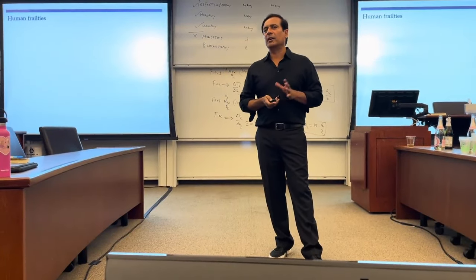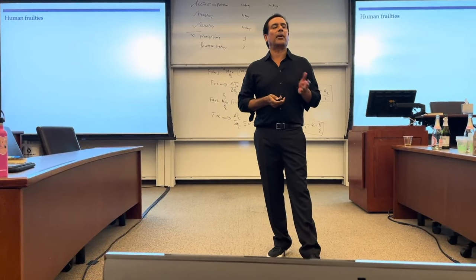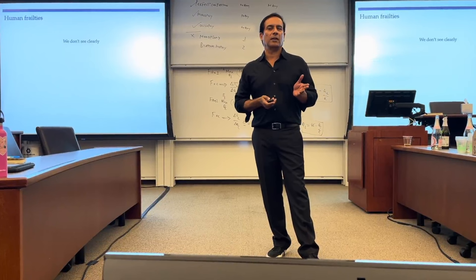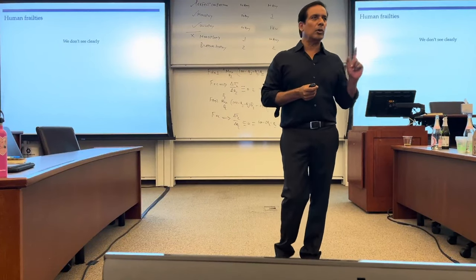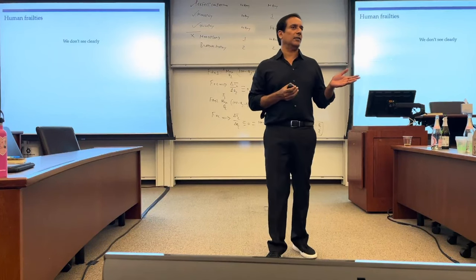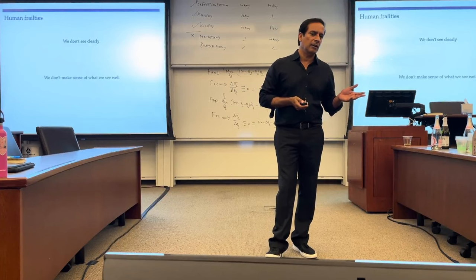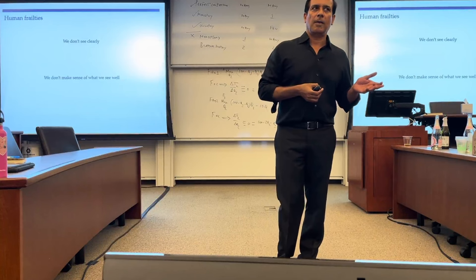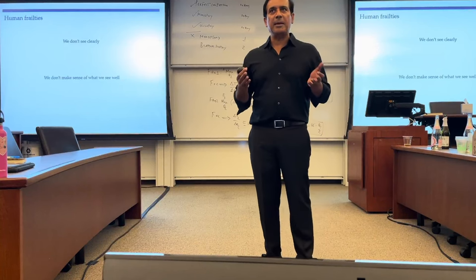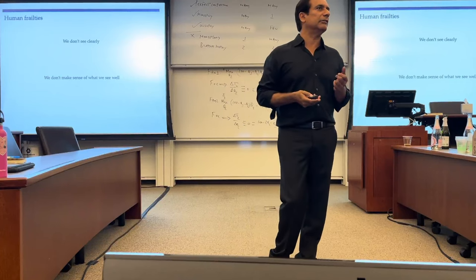Human frailties. Here I'm talking about weaknesses for all humans, even the brightest. We don't see very clearly. This is what we call in behavioral science cognitive biases. We don't see very well. We don't make sense of what we see very well. Not everyone who sees the same thing reaches the same conclusion. We misfire a lot, even very smart people.